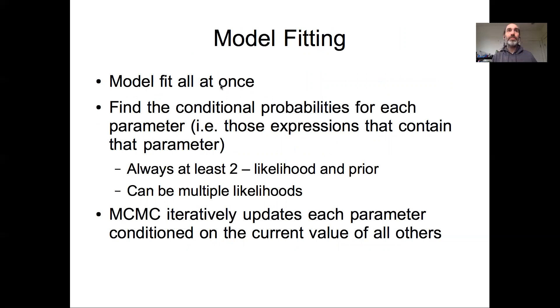And then again, the multinomial is just the multinomial we've seen in the past. So overall, when we put this all together, this model was fit all at once. We have four data models, but we're not running four different MCMCs; we're running one MCMC with all four data models at once. We're able to do this because we're able to find the conditional probabilities for each of those parameters. There's always at least two conditional probabilities: a likelihood and a prior. But there can often be multiple likelihoods in this case.